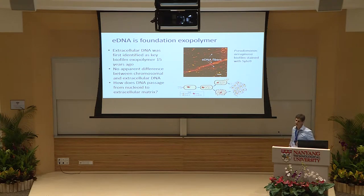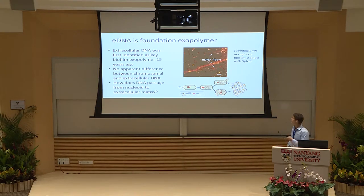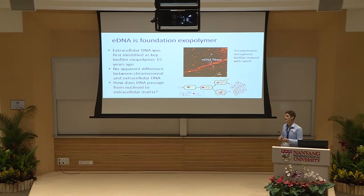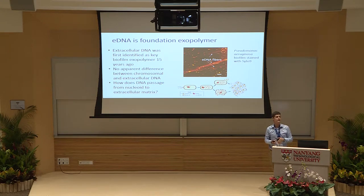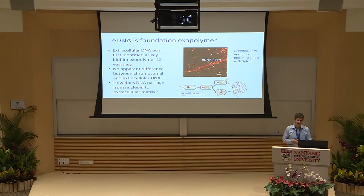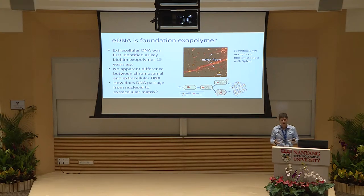We then stained our biofilms and confirmed this observation, seeing uptake of the DNA stain and DNA fibres throughout the biofilm. This is not completely new — eDNA was first identified in biofilms about 15 years ago, although its precise role had not been satisfactorily explained. When people tried to explain why eDNA behaves so differently from chromosomal DNA by looking at the sequence, there was no obvious difference between chromosomal and extracellular DNA. So having identified extracellular DNA as a foundation polymer, we wanted to understand what happens as DNA passes from the nucleoid into the extracellular matrix.